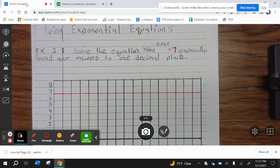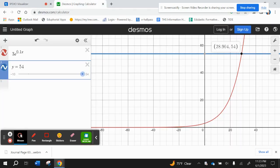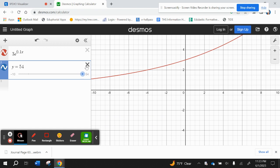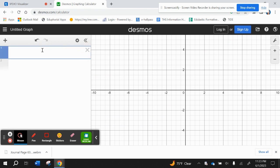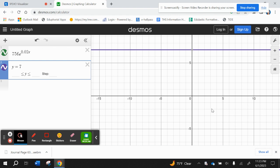Now let's go to Desmos. Press home screen. We want to go back to standard. So then 756e to the 0.02x, and then y equals 7.